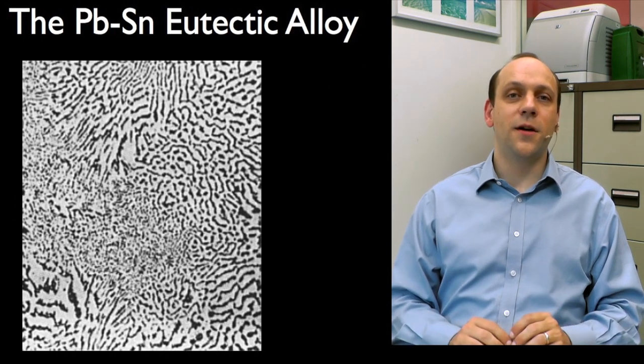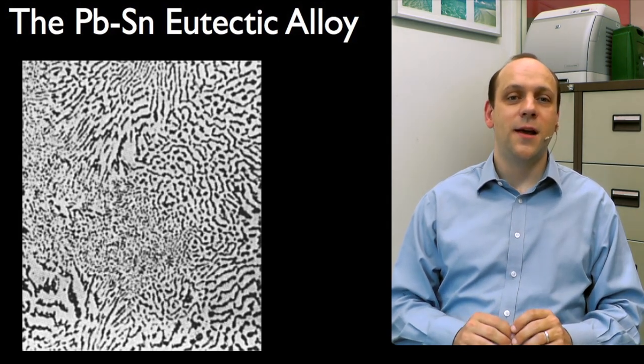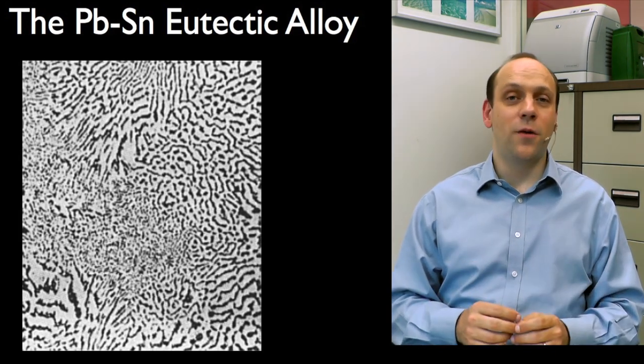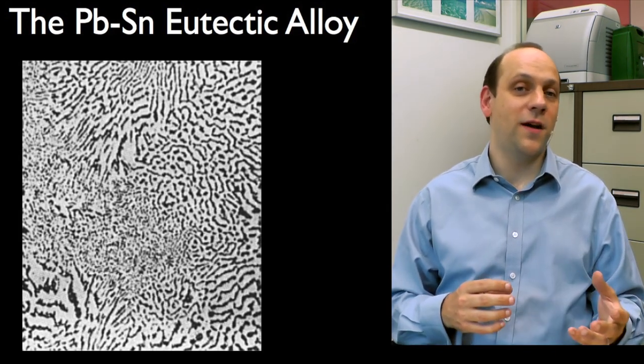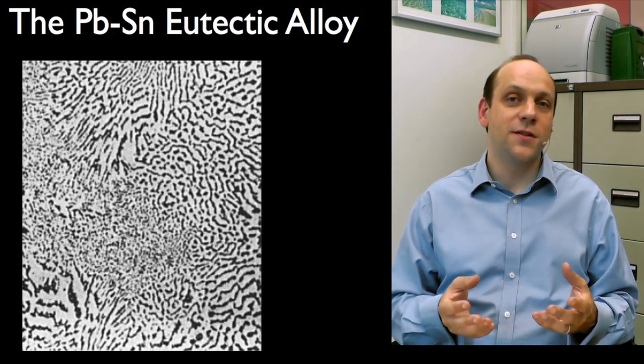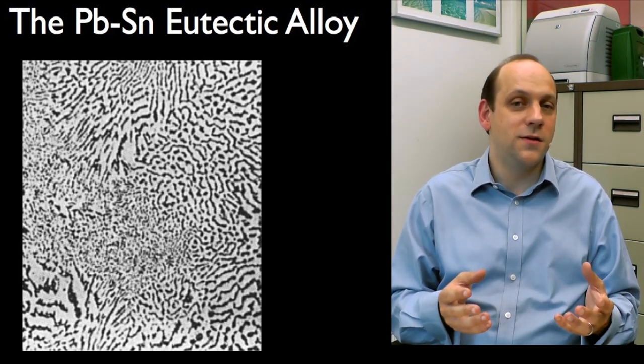So let's look at some microstructures. So this is the eutectic alloy in the lead-tin system. Here we've just got interleaved lamellae of lead and tin. If you ever want to work out which phase is the light phase and which phase is the dark phase, the answer is to look at the phase fractions.